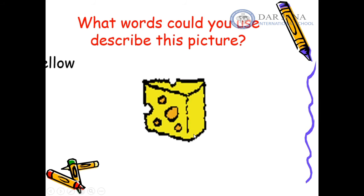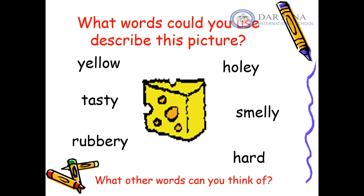What about this apple? We can say this apple looks red. Now, what words could you use to describe this picture of a slice of cheese? We can say it looks yellow. It tastes tasty. It feels rubbery. It looks holey because it has holes.